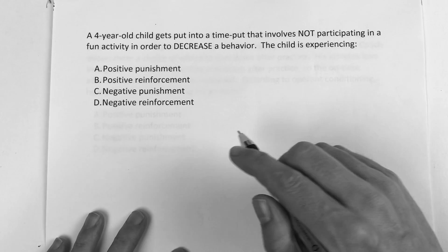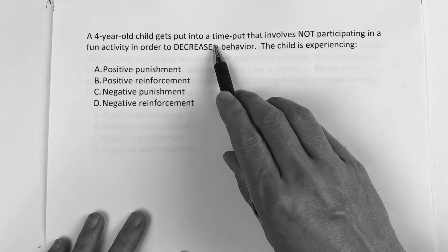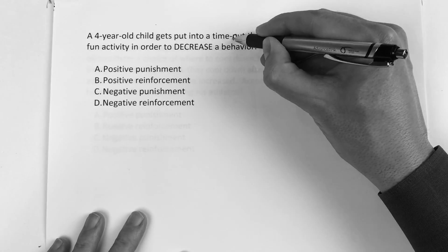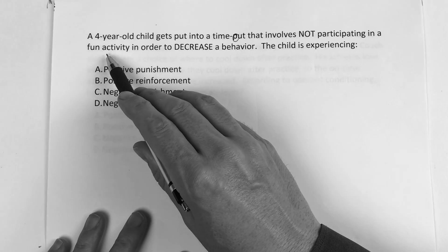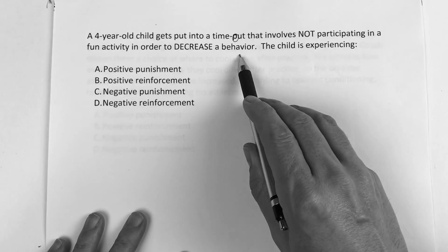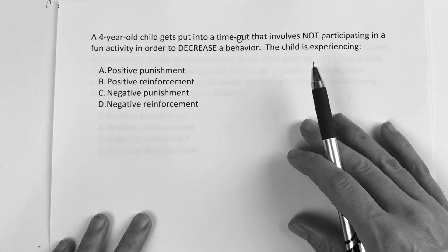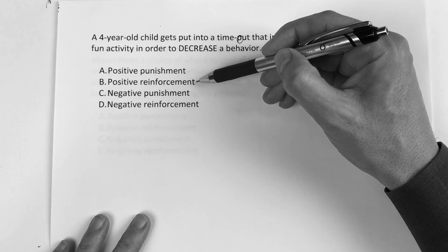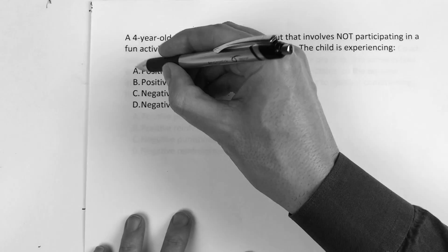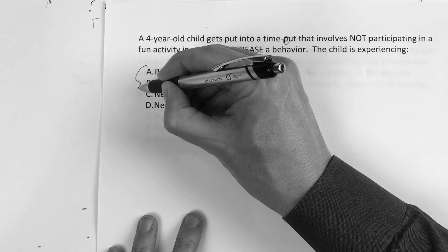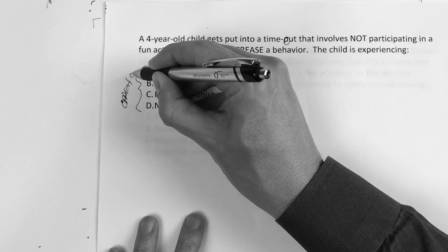So the question reads: a four-year-old child gets put into a time out that involves not participating in a fun activity in order to decrease the behavior. The child is experiencing which of the following? Anytime you see positive punishment, positive reinforcement, negative punishment, or negative reinforcement, you've got to be thinking operant conditioning.